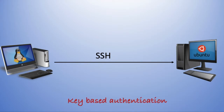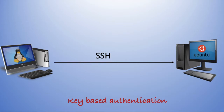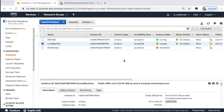So now we're going to see how to do key-based authentication. First, we have to create the private and public key of the local machine from where you are going to connect to the remote machine. We generate the key from the local machine and then share and save that public key into the authorized keys of the remote machine. After that, we can easily connect to the server.